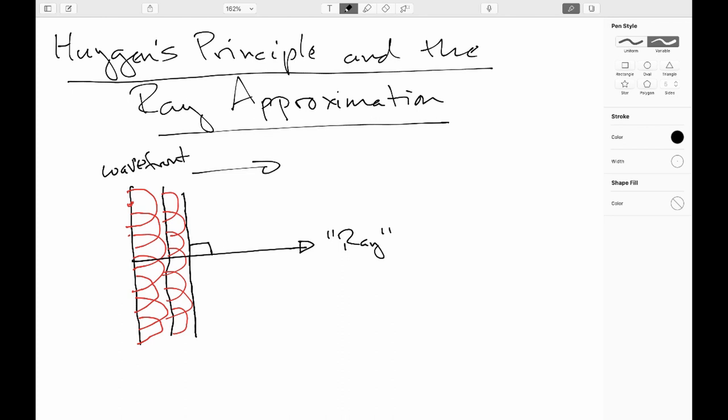And in the modern view, just to round the story out, so initially Newton was saying it looks like a particle. Huygens comes out there and says it looks like a wave. People debate back and forth about it for about a century or so. They eventually settled in on the wave.